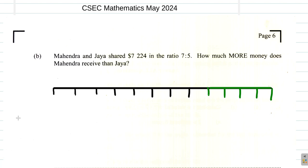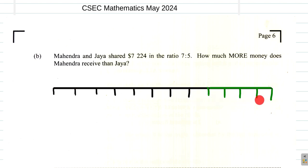Now, the total number of parts — counting them all — gives you 7 plus 5, which is 12. So you have a total of 12 equal parts.